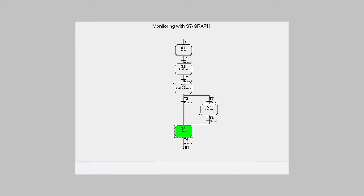S7 graph knows two types of error monitoring: the interlock and the supervision.